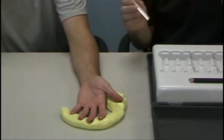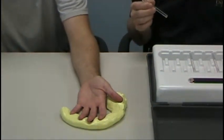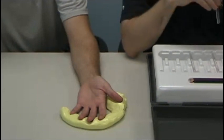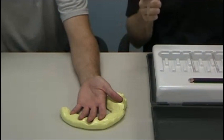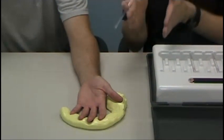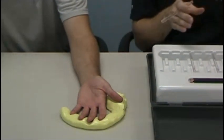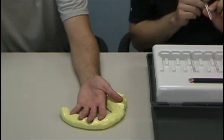There are several monofilaments. In the kits we have here, there are five monofilaments. These five monofilaments correspond to each threshold of testing, from diminished light touch to diminished protective sensation and so on.